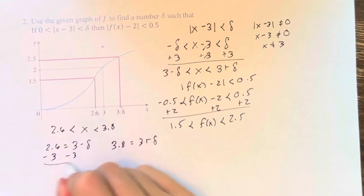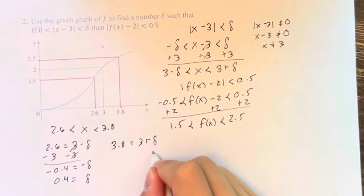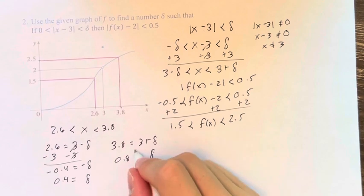And we're therefore saying that 2.6 has to equal 3 minus delta and 3.8 has to equal 3 plus delta, right? And as we'll see, this will output different deltas, right? So we get delta equals 0.4 and delta equals 0.8, right?